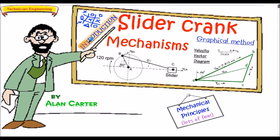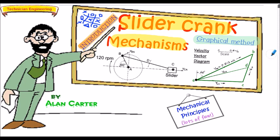Hello and welcome to this introduction to slider-crank mechanisms. Within this presentation we'll be using graphical methods to construct velocity vector diagrams and acceleration vector diagrams for a particular instant in time of the mechanism's motion, from which we can solve for various kinematic properties associated with the members of the slider-crank mechanism, also termed a three-bar linkage mechanism or three-bar chain. We have a crank from A to B, a connecting rod from B to C, and the slider or piston at point C.